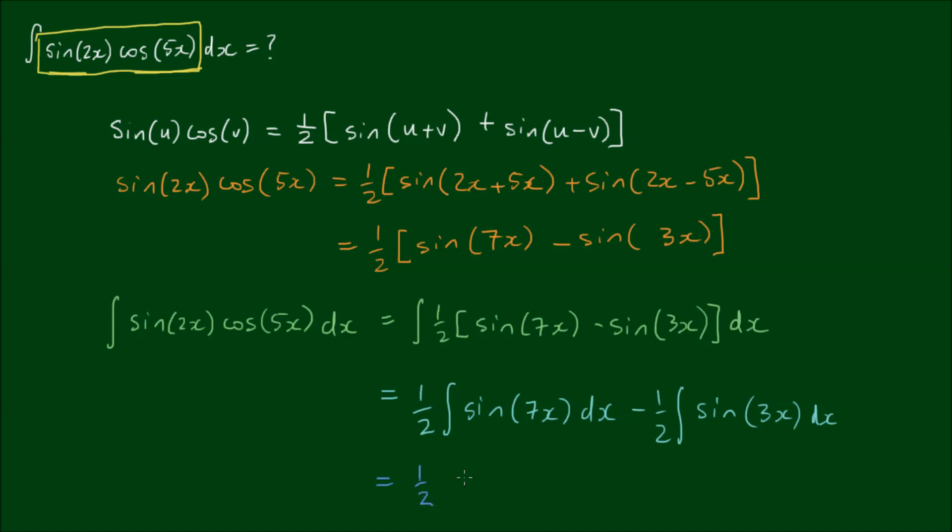Sine integrates to negative cosine. So it's the negative cosine of 7x. But we have to divide by the derivative of what's inside the cosine term. So it's effectively applying the negative chain rule. And the derivative of 7x is just 7 minus a half.